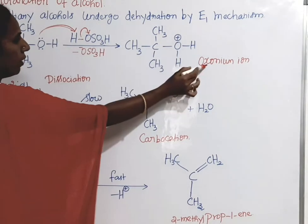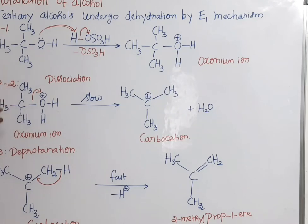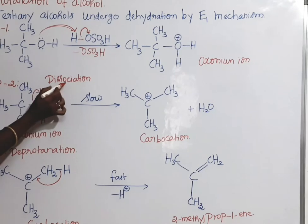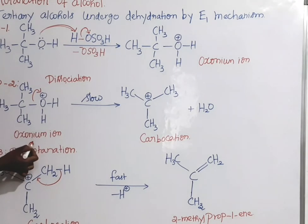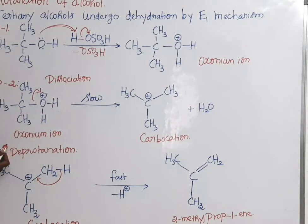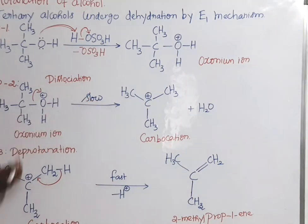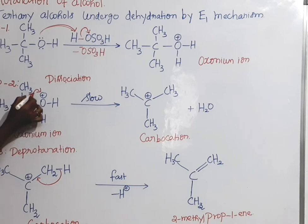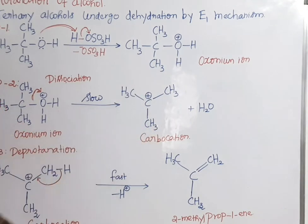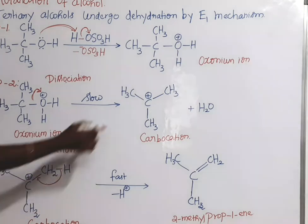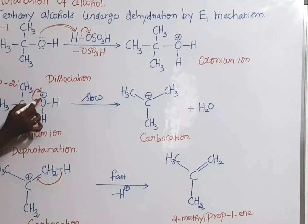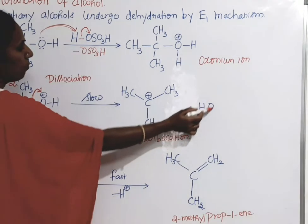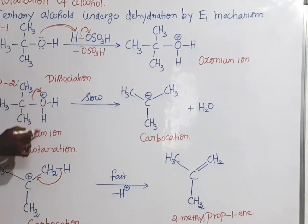The second step is dissociation of the oxonium ion. It is a slow process. Here we're talking about formation of a carbocation. When the bonding is shifted to the bond, it gets neutralized and removed as a water molecule. This is the second step: dissociation of the oxonium ion.